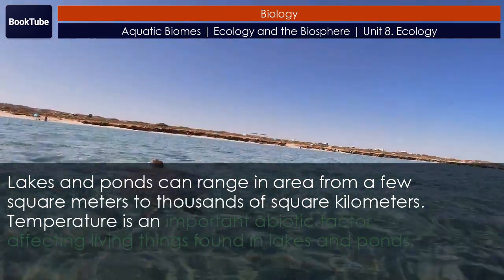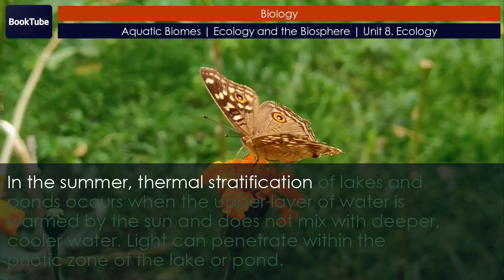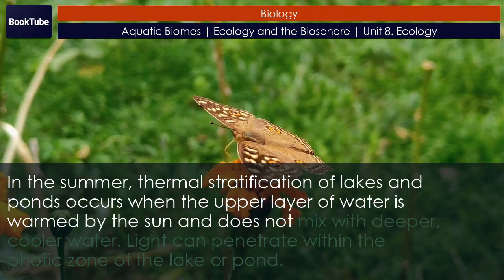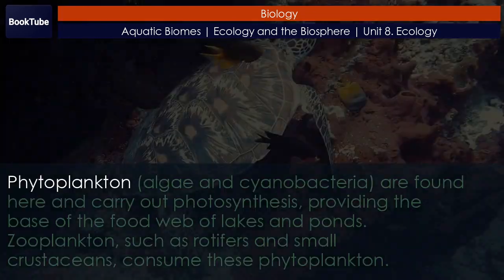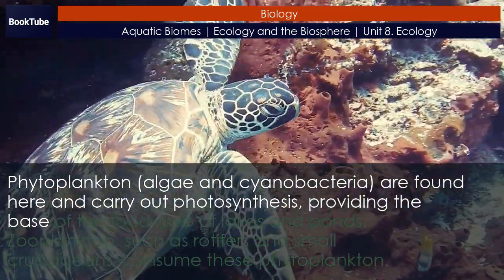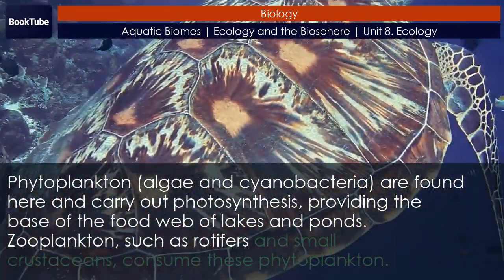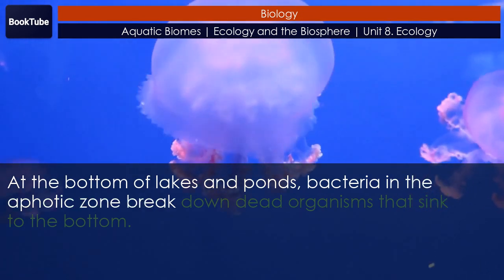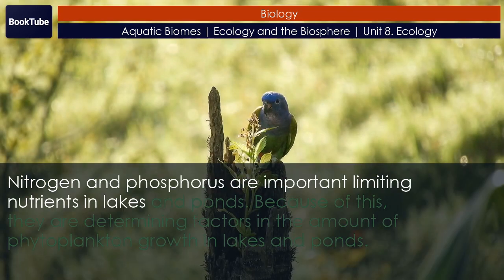Lakes and ponds can range in area from a few square meters to thousands of square kilometers. Temperature is an important abiotic factor affecting living things found in lakes and ponds. In the summer, thermal stratification of lakes and ponds occurs when the upper layer of water is warmed by the sun and does not mix with deeper, cooler water. Light can penetrate within the photic zone of the lake or pond, where phytoplankton, algae, and cyanobacteria are found and carry out photosynthesis, providing the base of the food web. Zooplankton such as rotifers and small crustaceans consume these phytoplankton. At the bottom of lakes and ponds, bacteria in the aphotic zone break down dead organisms that sink to the bottom.